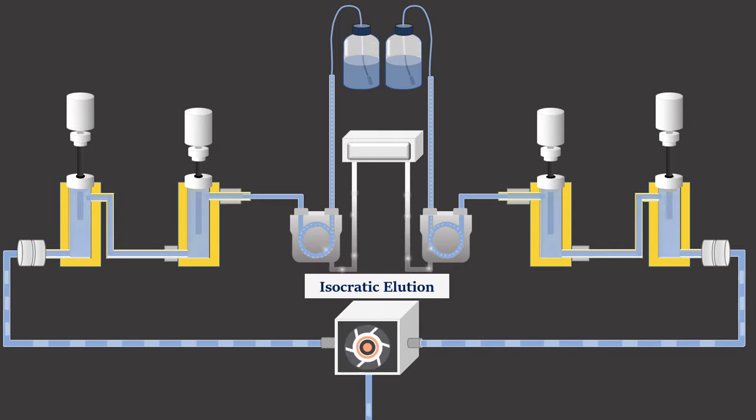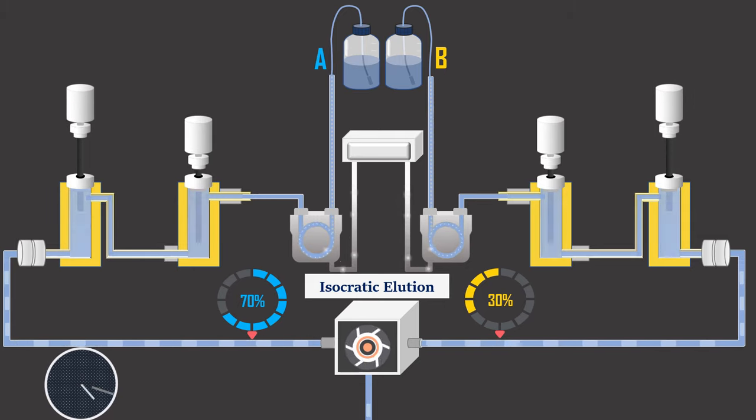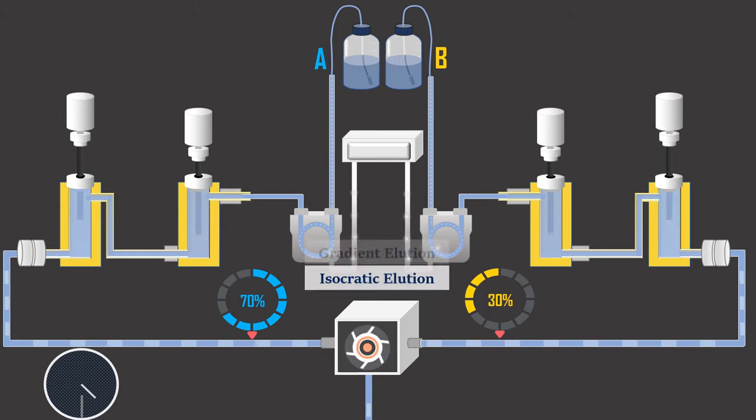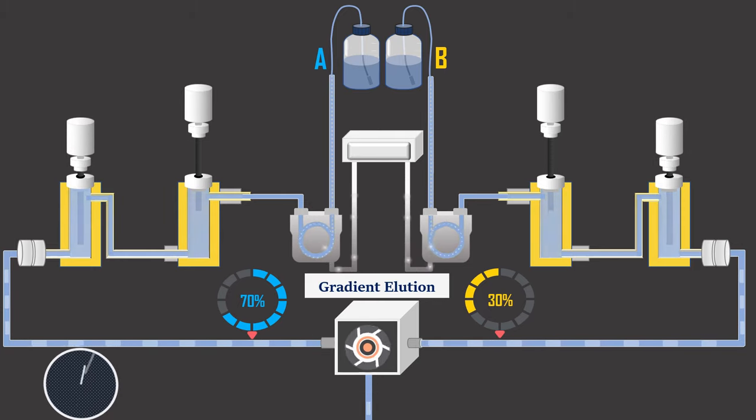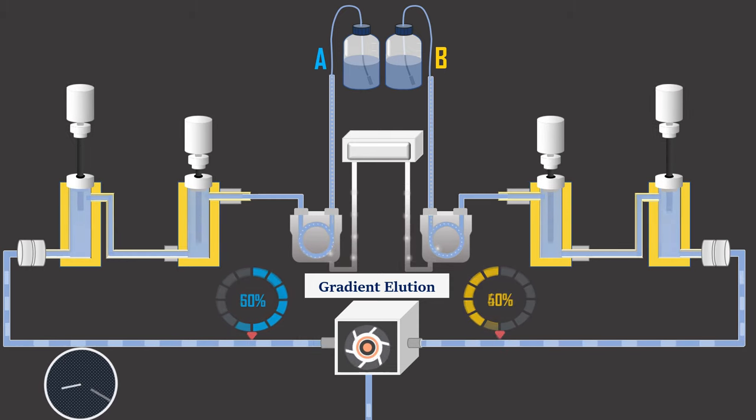The HPLC analysis commonly uses isocratic or gradient elution. In isocratic mode, the mobile phase composition remains constant throughout the procedure. Whereas in gradient mode, the mobile phase composition is changed during the separation process.